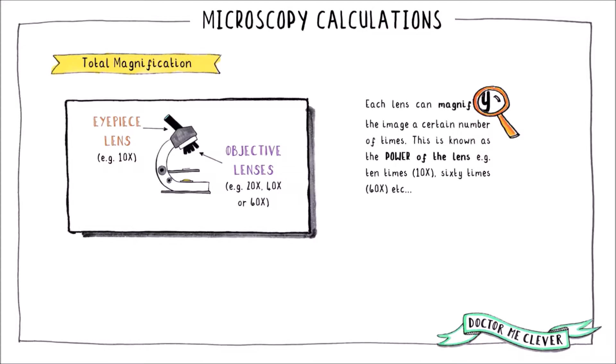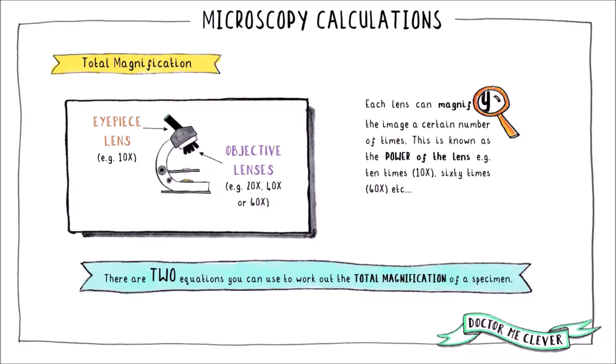For example, the eyepiece lens usually has a magnifying power of 10 times and the objective lenses range in magnifying power from 4 times to 60 times usually. The combined magnification of the lenses is the total magnification and there are two ways that you can calculate this.